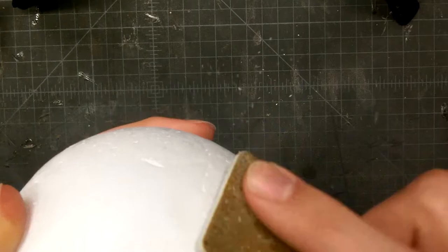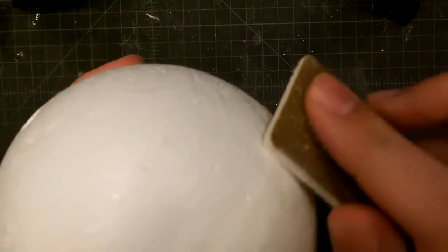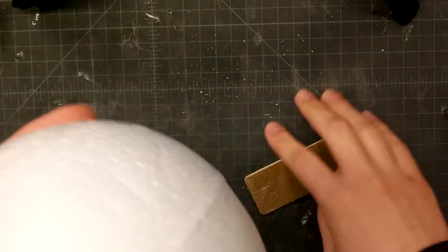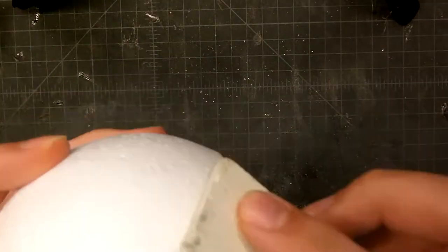First I started out by sanding the styrofoam ball, mostly just to get rid of the seam it had in the middle. There were some other parts that I sanded down just so it was smoother.